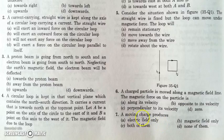In question number seven, a moving charge produces both an electric field as well as a magnetic field.